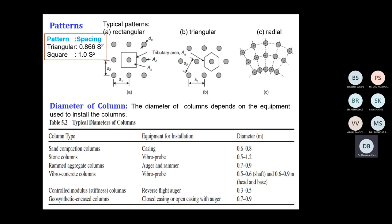Another important design aspect is what pattern to follow. Since the beginning of ground improvement, we have discussed two patterns: triangular pattern and square pattern. The relationship between effective area and spacing is 0.866 S² for triangular and S² for square. There is also a radial pattern possible for stone columns, but either rectangular or triangular are the predominantly used patterns in general.